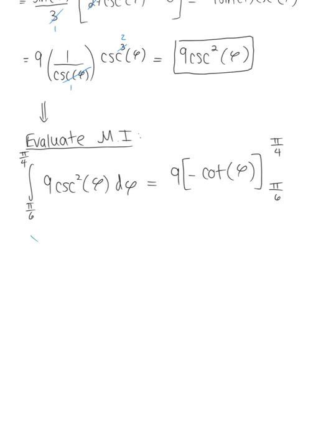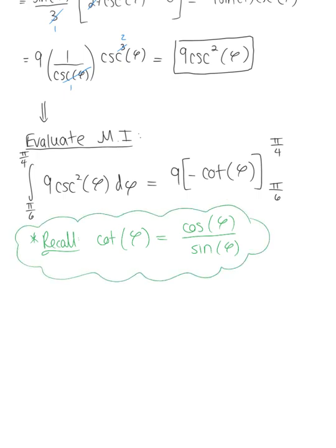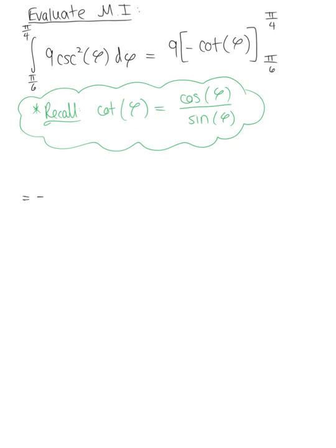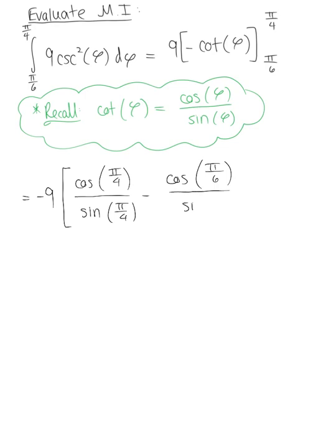Recall that cotangent of phi is equivalent to cosine of phi divided by sine of phi. It can be easier to evaluate using this trig identity rather than plugging directly into cotangent. So we have negative 9 multiplied by cosine(pi/4) over sine(pi/4), minus cosine(pi/6) over sine(pi/6). At pi/4, the numerator is root 2 over 2 and the denominator is root 2 over 2, so this cancels to 1.